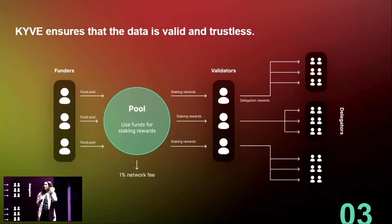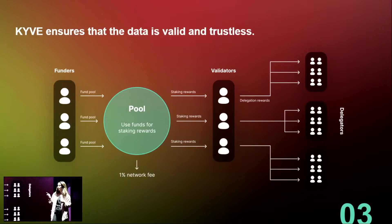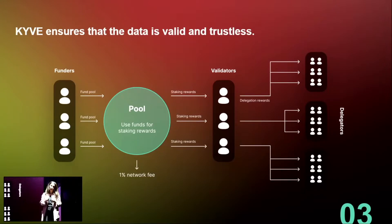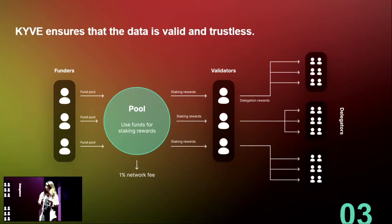So how does Kyve work? We have something called storage pools, and within the storage pool you have different actors. You have the funders — those are entities, foundations, or anyone who wants to make the data accessible or who are dependent on the data. They need to fund the pools with native Kyve tokens. Then you have the validators and the uploaders. The uploaders upload the data onto Arweave, and the validators make sure that the data is valid. We are currently using Arweave, however we aim to become storage-backend agnostic, which is why we are soon going to add support for IPFS.